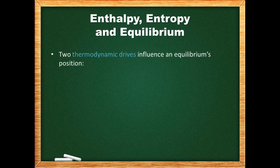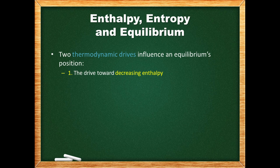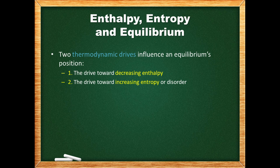There are two thermodynamic drives that influence an equilibrium's position. One is the drive towards decreasing enthalpy. Objects naturally adopt the lowest energy state available to them, and chemical reactions tend to proceed in the exothermic direction. The other is the drive towards increasing entropy. Randomly moving objects become disorganized when left on their own. Diffusion — the self-movement of chemicals from an area of high to low concentration — is an example of this tendency towards disorder.